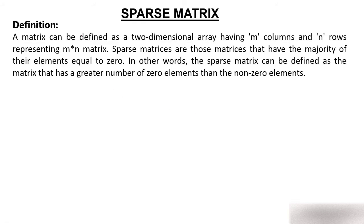Let's start with the sparse matrix. First, we'll discuss the definition. A matrix can be defined as a two-dimensional array. For example, a two-cross-five matrix is a two-dimensional array having two rows and five columns. So a matrix can be defined as a two-dimensional array having m columns and n rows, representing an m cross n matrix.